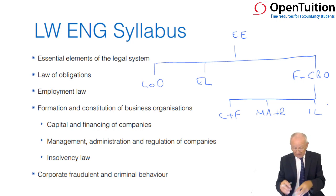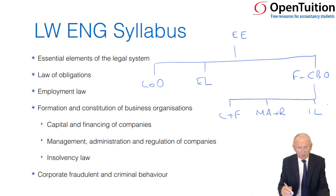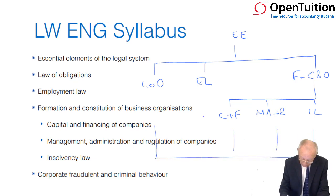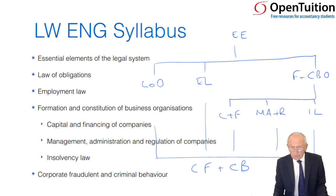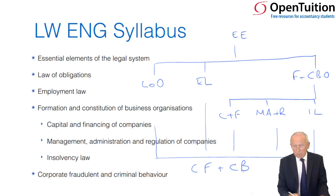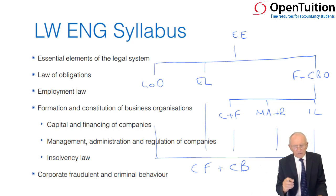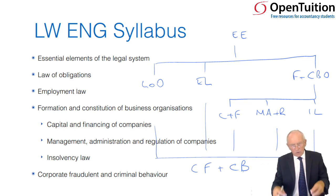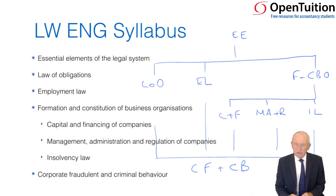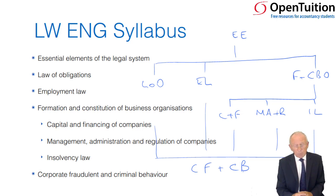Pervasive throughout all of these separate elements of the law syllabus, we have this final one: corporate fraud and criminal behavior. Fraud and criminal behavior can apply throughout the entire law syllabus — the law of obligations (you could enter into a contract to kill somebody, which is clearly criminal behavior), employment law (treating people as independent agents whereas in fact they are employed), and capital and financing (borrowing money without any intention of paying it back). So all of these are affected by corporate fraud and criminal behavior. We will look at insider dealing, money laundering, wrongful trading, fraudulent trading, abuse of company name, and most recently the Bribery Act of 2010.